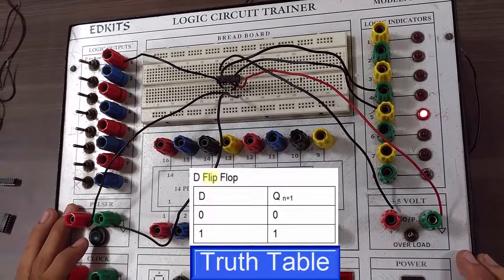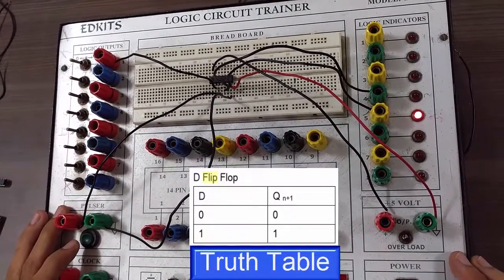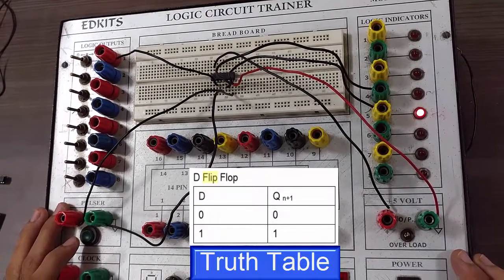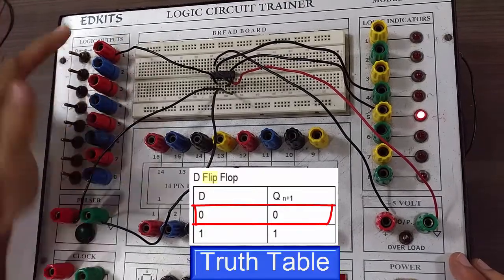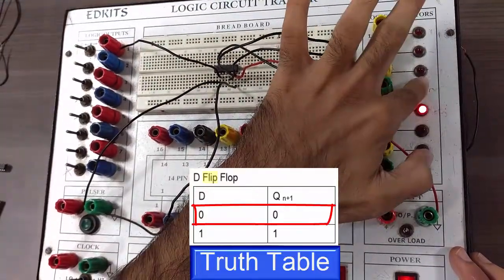Now we have made the connections according to the pin diagram of IC 7474 which you have to learn. You have no other choice. Now you can see for data input 0, you are getting Qn bar as 1 and Qn as 0.